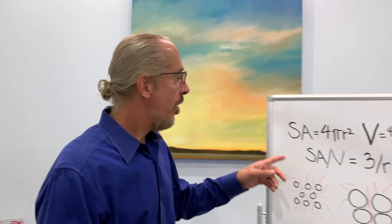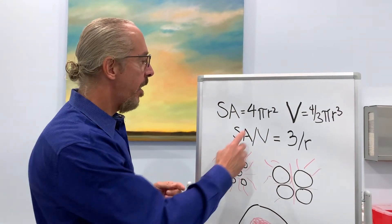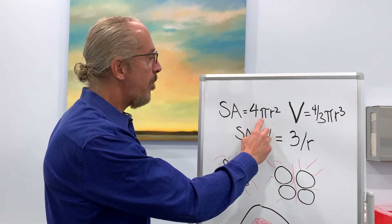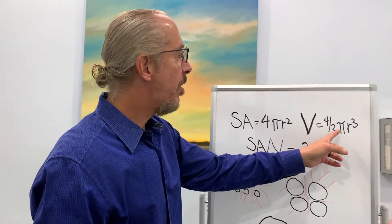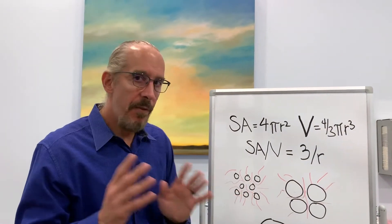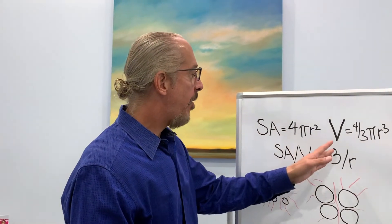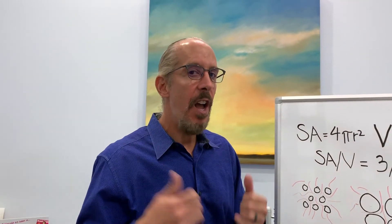Let me just boil down to the specifics. The surface area of a sphere is 4 pi r squared, and the volume of the sphere is 4 thirds pi r cubed. So when you do the surface area to volume ratio, you get a ratio of 3 over r. The bottom line is that when you increase the radius of a sphere, its surface area to volume ratio goes down.